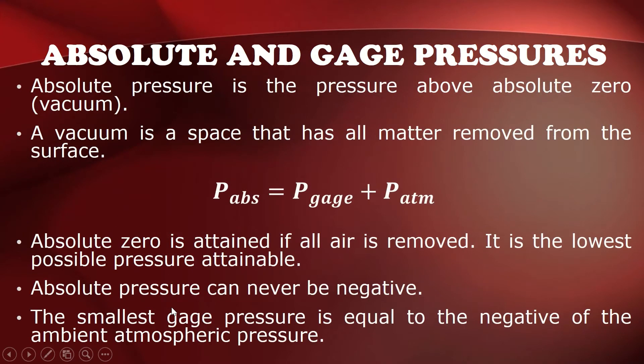And the absolute pressure is the pressure above absolute zero or vacuum, which is a space that has all matter removed from the surface. So the absolute pressure is equal to the sum of the gauge and the atmospheric pressure. So take note that the absolute zero is attained if all air is removed. It is the lowest possible pressure attainable and can never be negative.